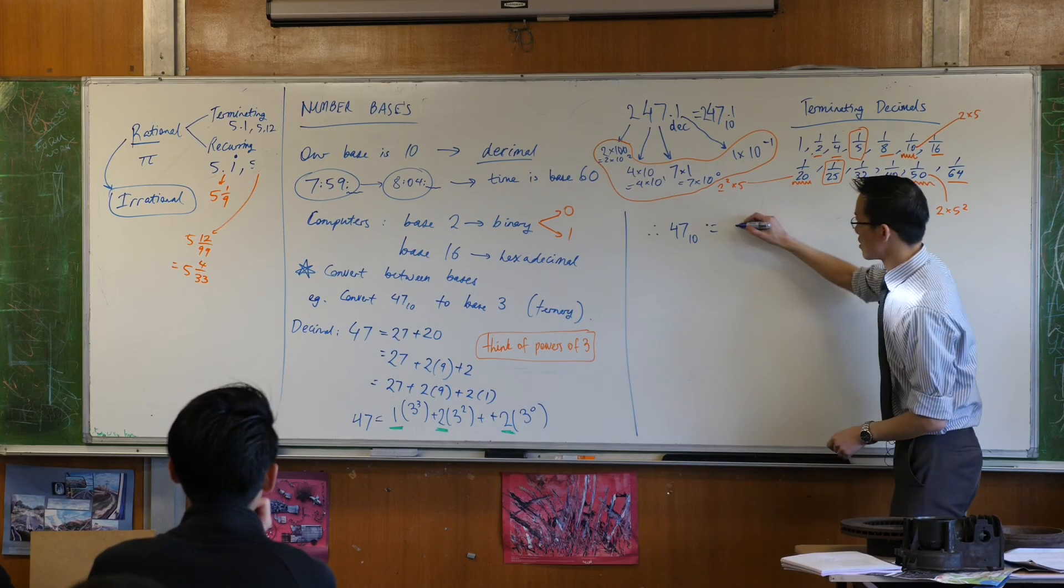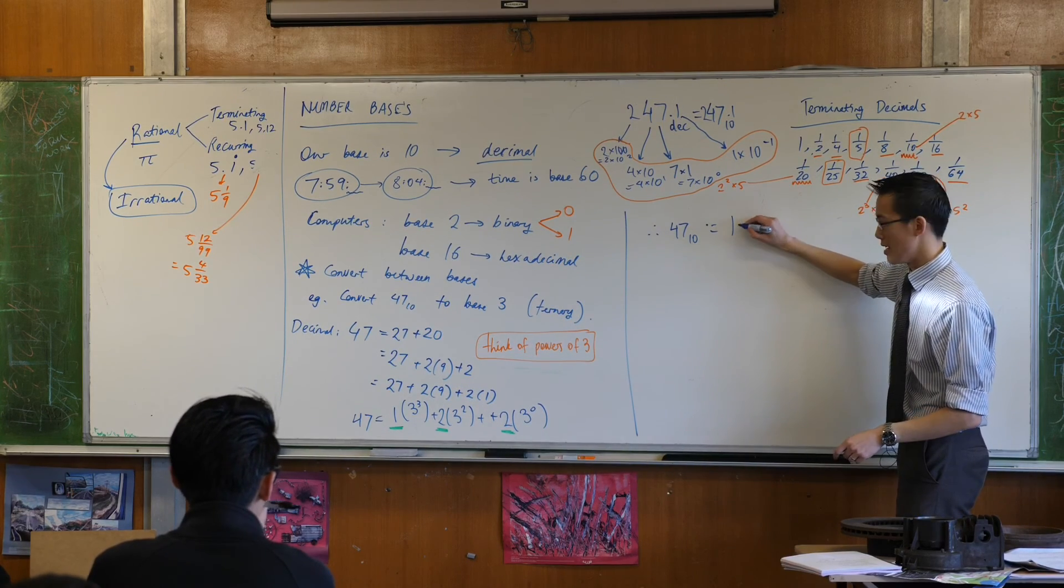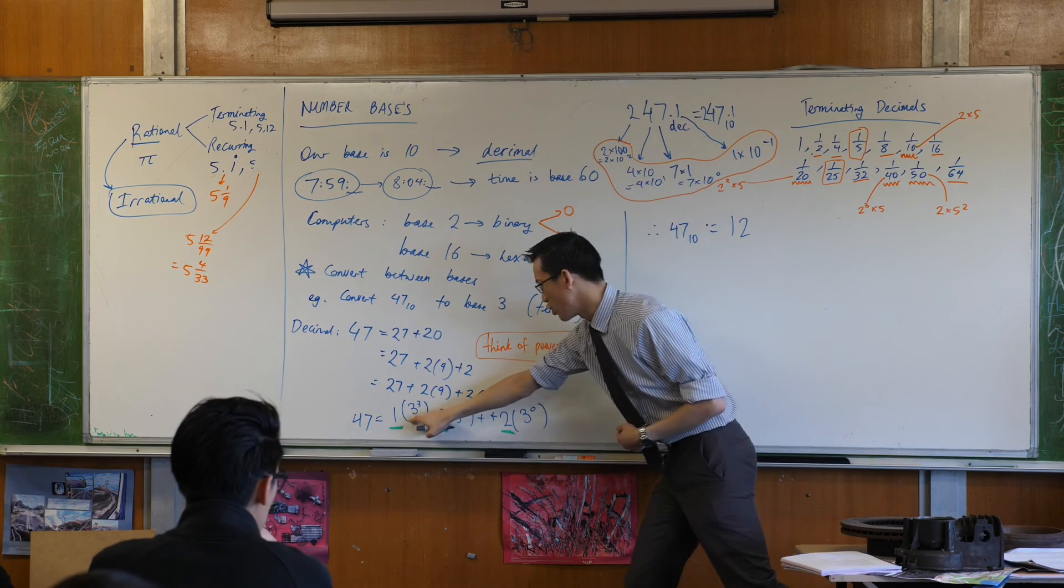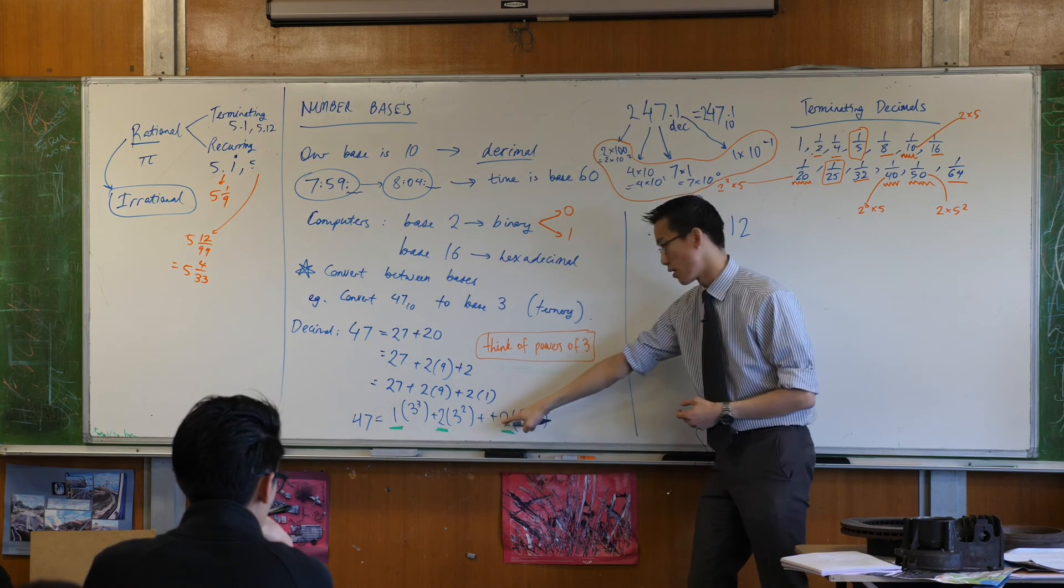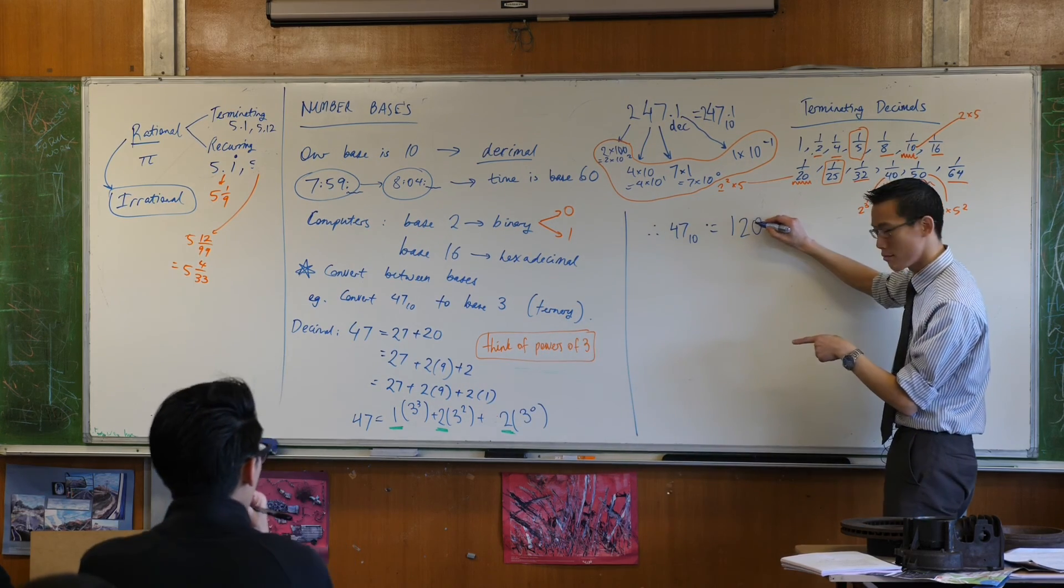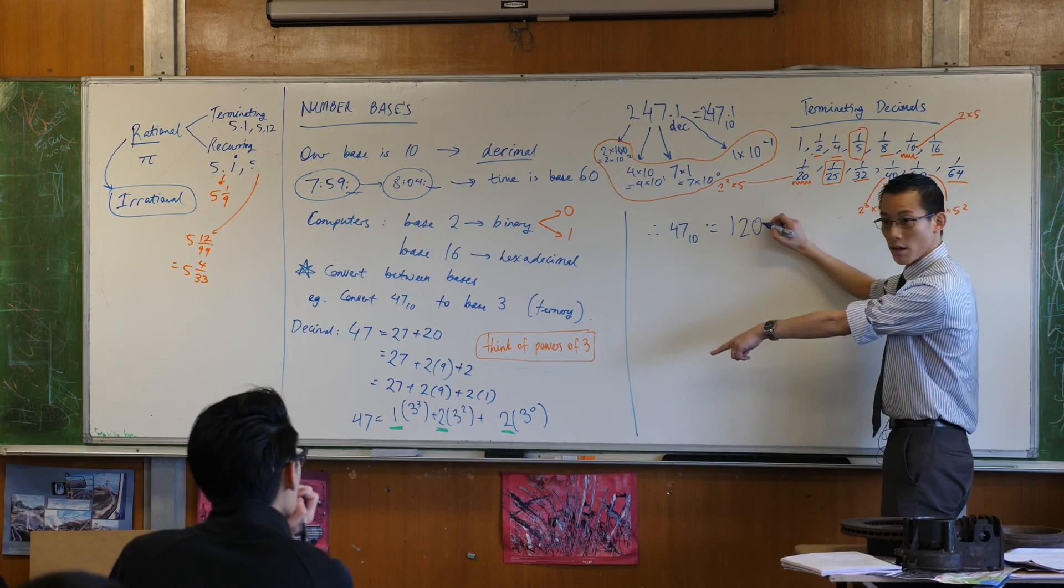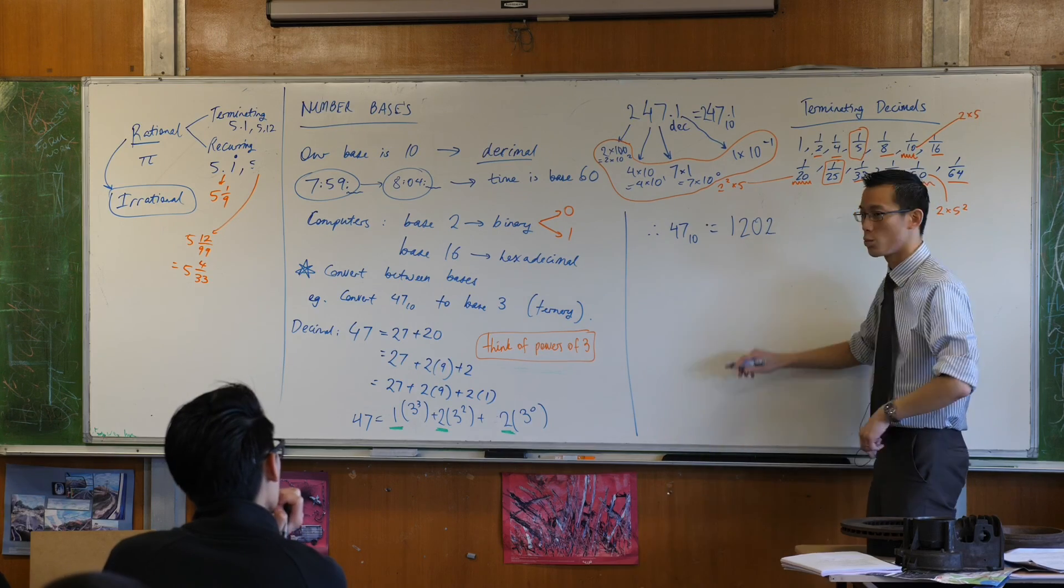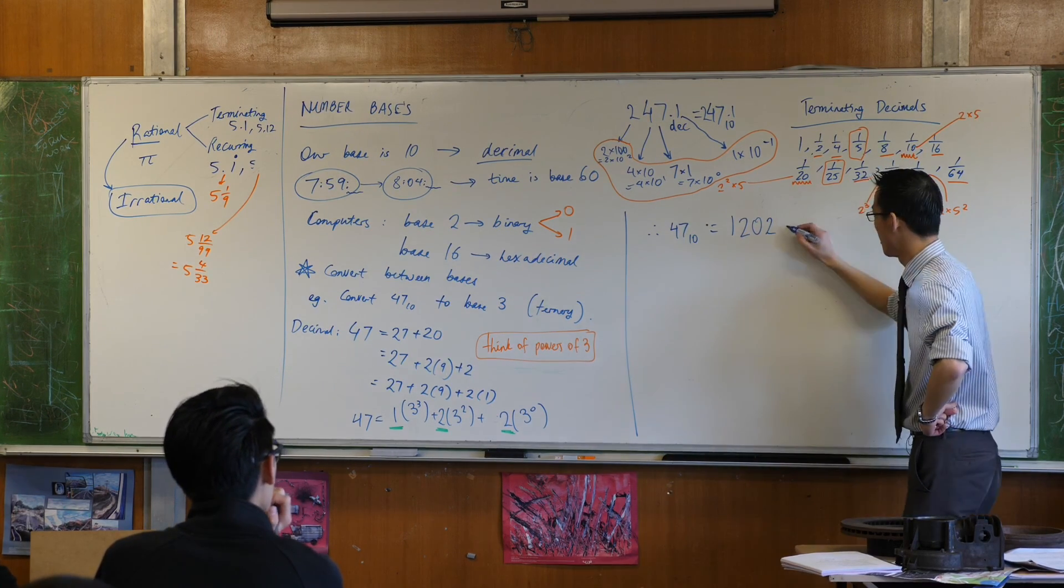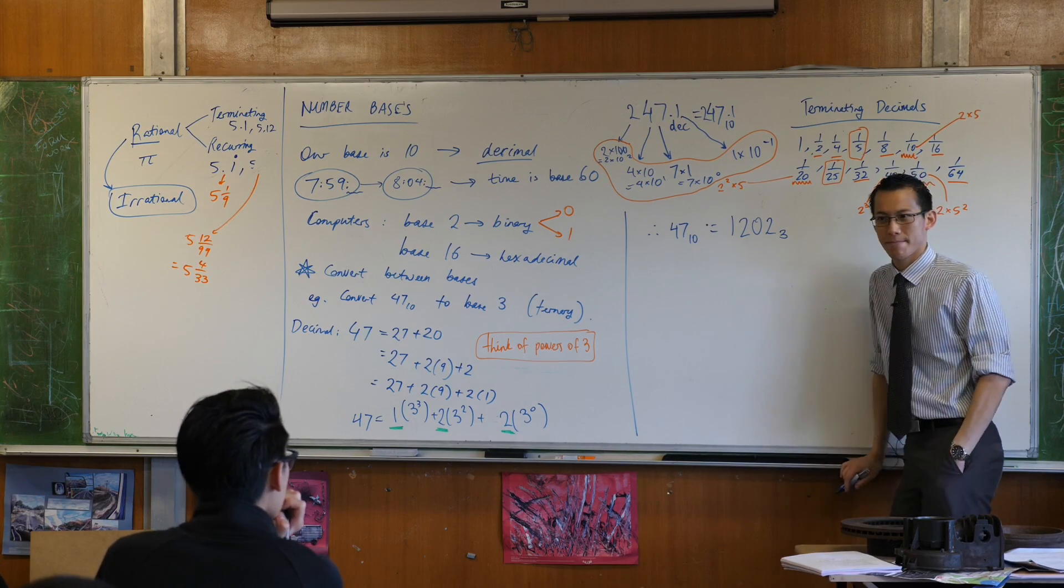The biggest number you've got is a 1. Then you get a 2. I've got 3 cubes. I've got 3 squares. How many 3 to the 1's did I have again? I don't have any. You said 0. And then how many of the units do I have? 2. That is 47 in base 3. Ok?